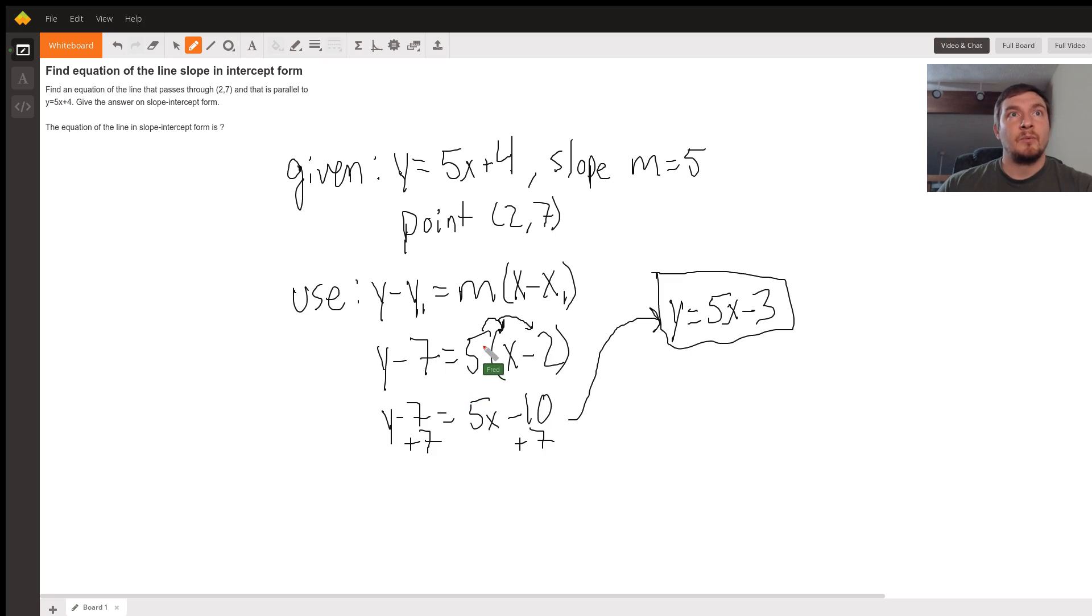From here, we will distribute the 5 into the x and the minus 2, so multiplication, and that'll give us y minus 7 equals 5x minus 10.